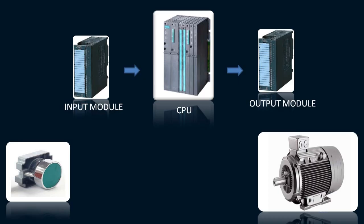The output card is interfaced with the final control element — like a motor — and it will give the signal to the motor that it is time to start. The push button is sending a command to the input card of the PLC. The input card is just an interface between the PLC CPU and the field device — in this case, the push button. You get the signal from the push button through the input module, which is the interface between your CPU and the field element.